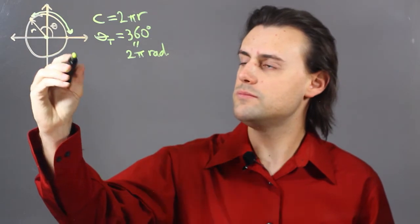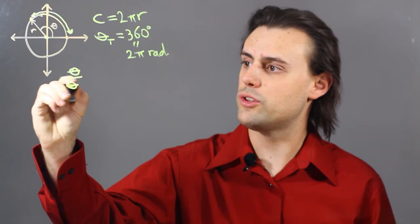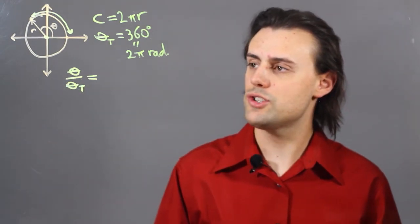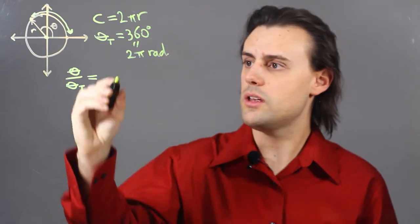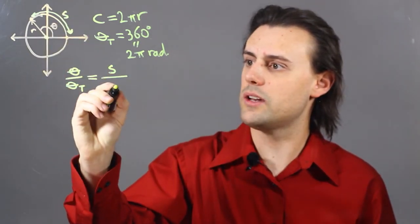So what I can simply do is have my angle over the total possible angle, and that ratio will be equal to the arc length, which I'll denote as S, divided by the circumference.